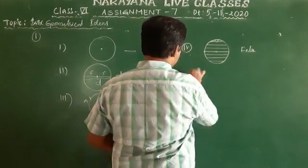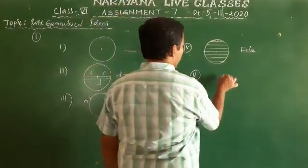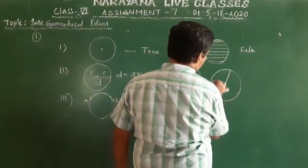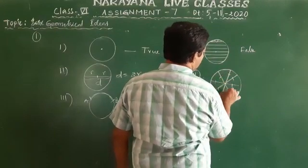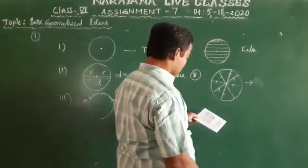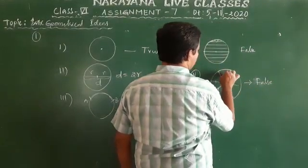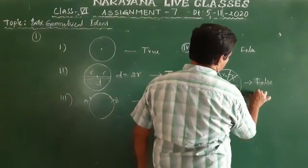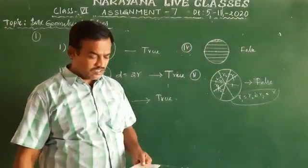Fifth one — all radii are not equal length. Radii means the distance from the center to points on the circle. So all radii of a circle are always equal in length — r1, r2, r3 are all equal to r. The statement says 'not equal,' which is false. All radii of a circle are always equal.